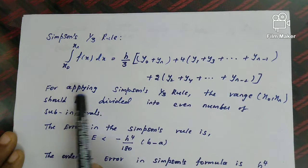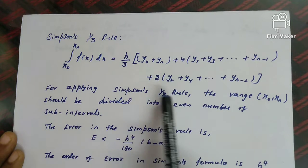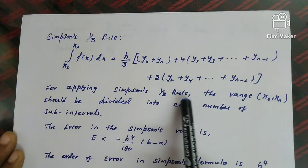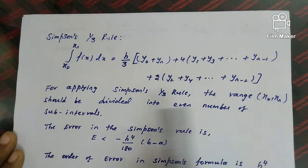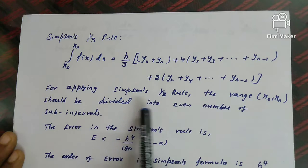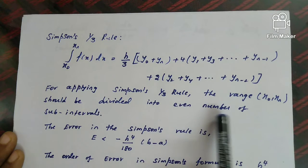The rule can be remembered as: h/3 into [y₀ + yₙ + 4 times odd ordinates + 2 times even ordinates].